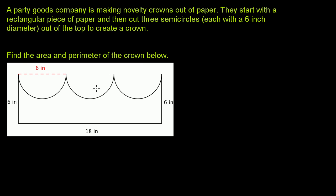Let's start with the perimeter. We have to find the lengths of each of these semicircle arcs right over here, and then add those, and then add them to the straight lengths along the bottom — that latter part is pretty straightforward. But let's think about how long this arc is that I am highlighting in blue. We know that this is a semicircle.